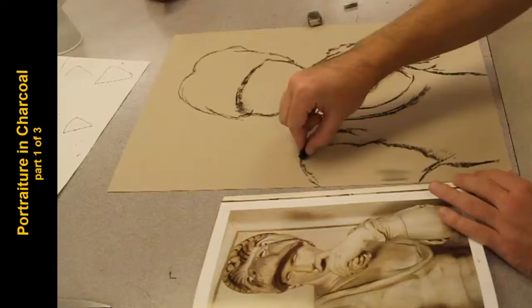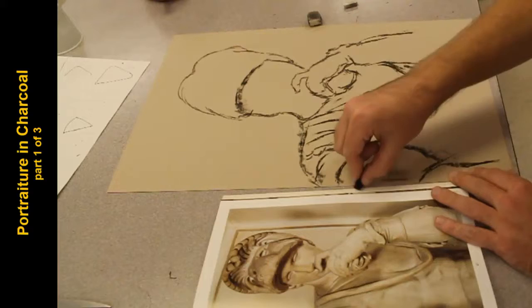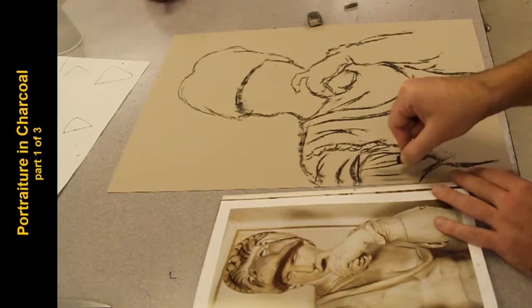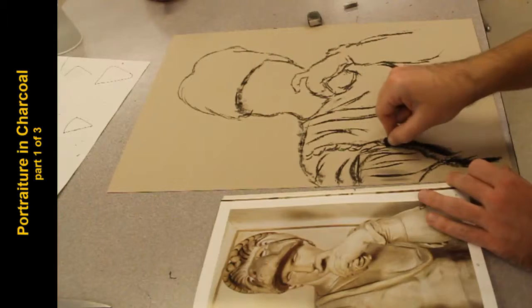So it's holding some sort of little cloth thing. Draw down this and his shoulder pad armor stuff. Once again, using sort of the edge, the side edge of the charcoal.